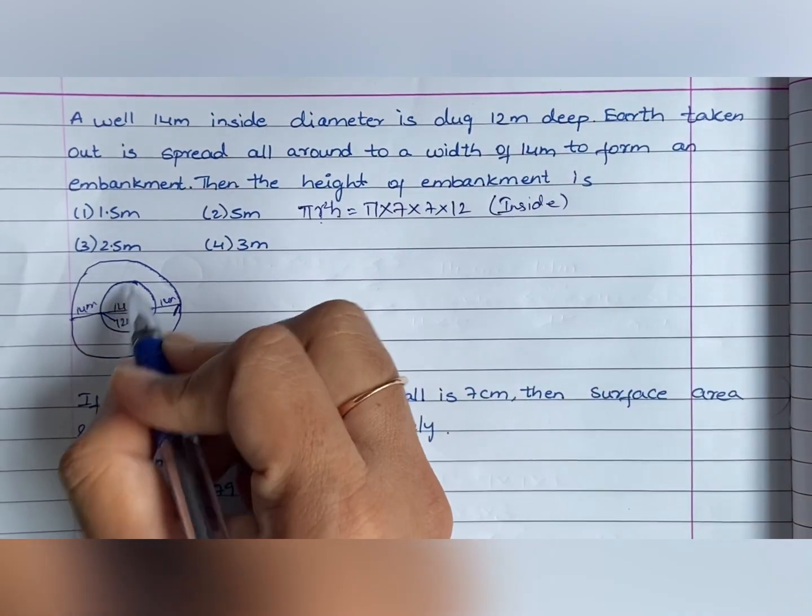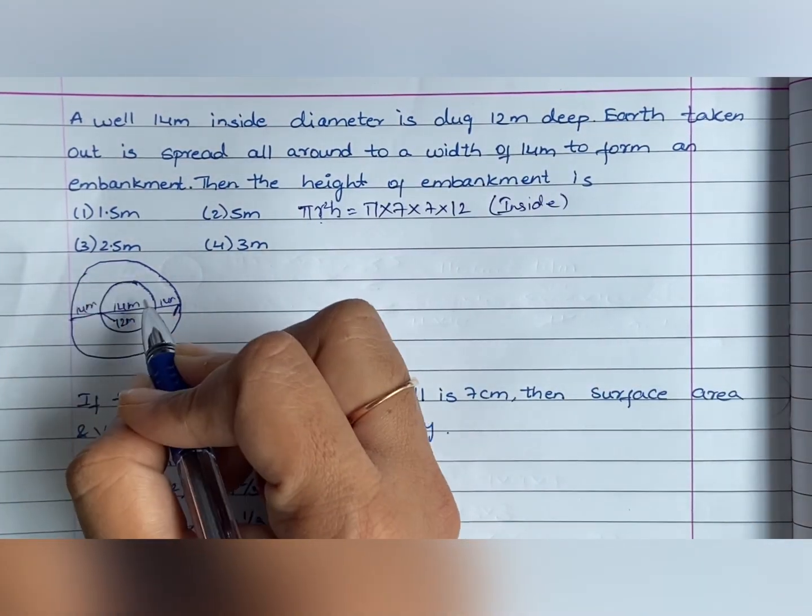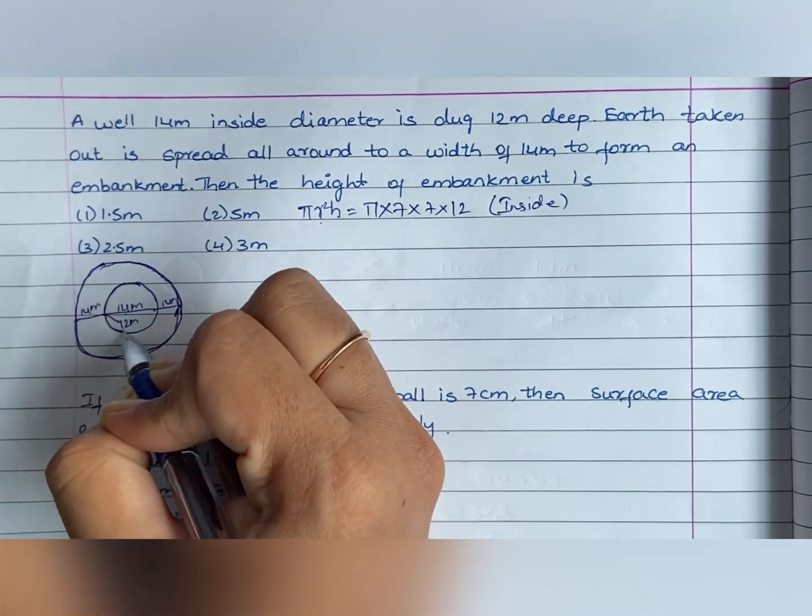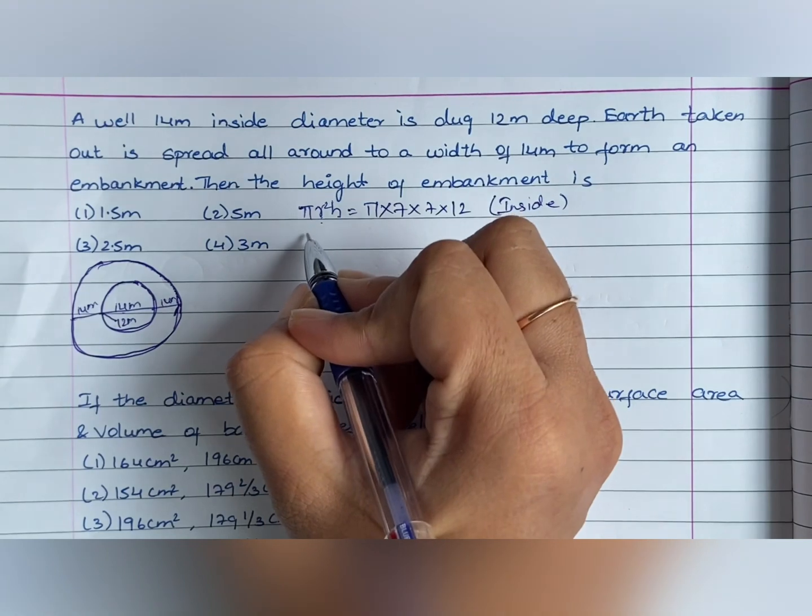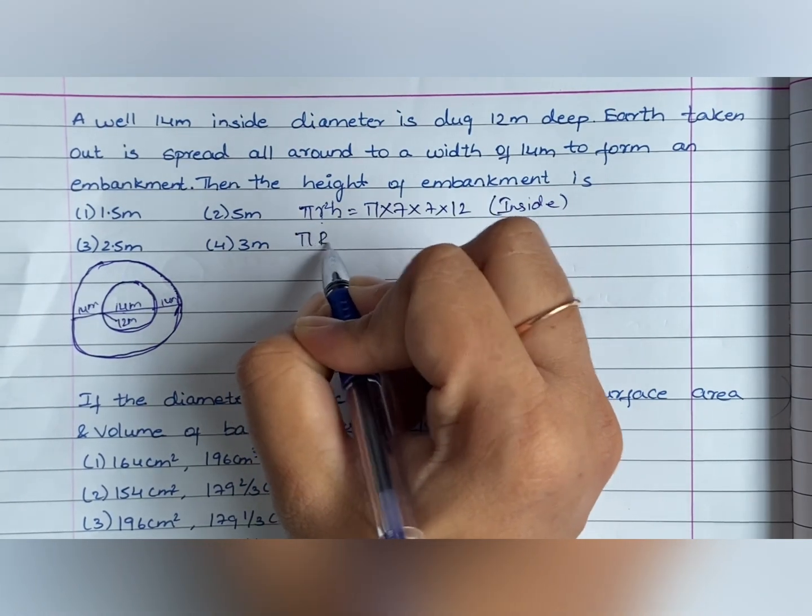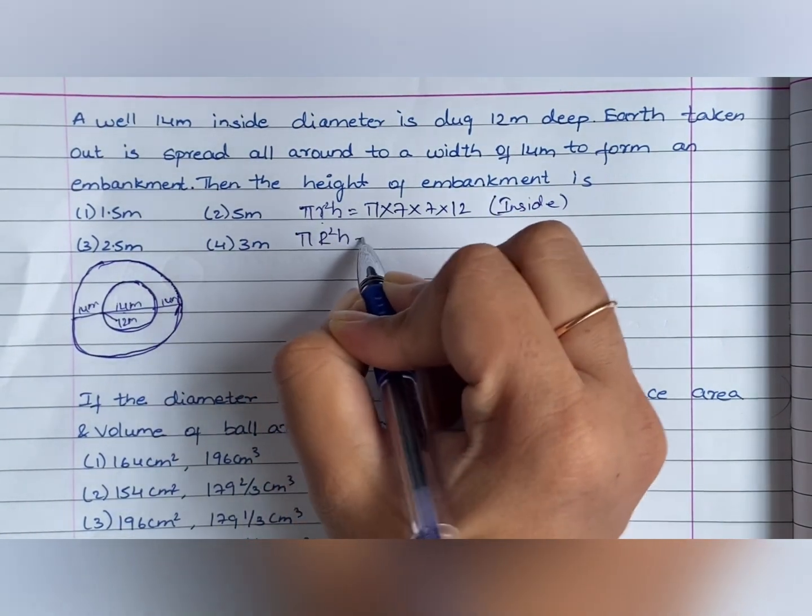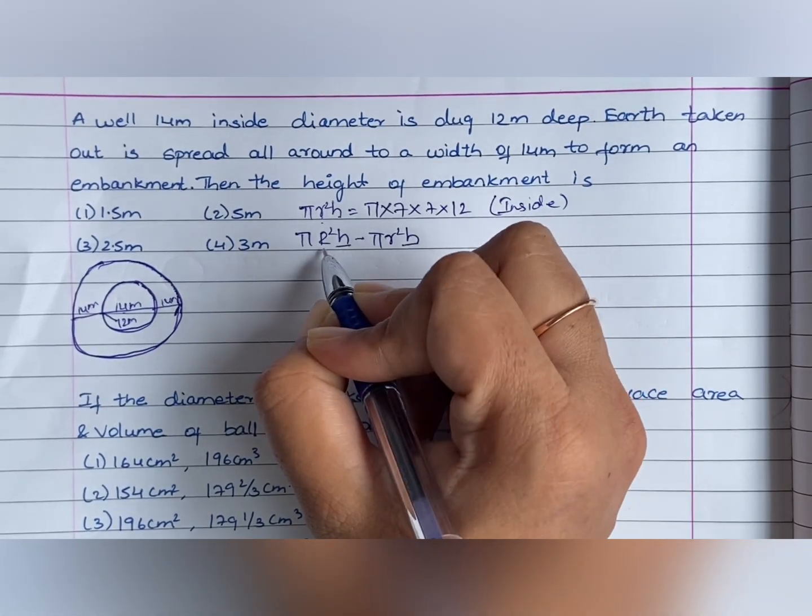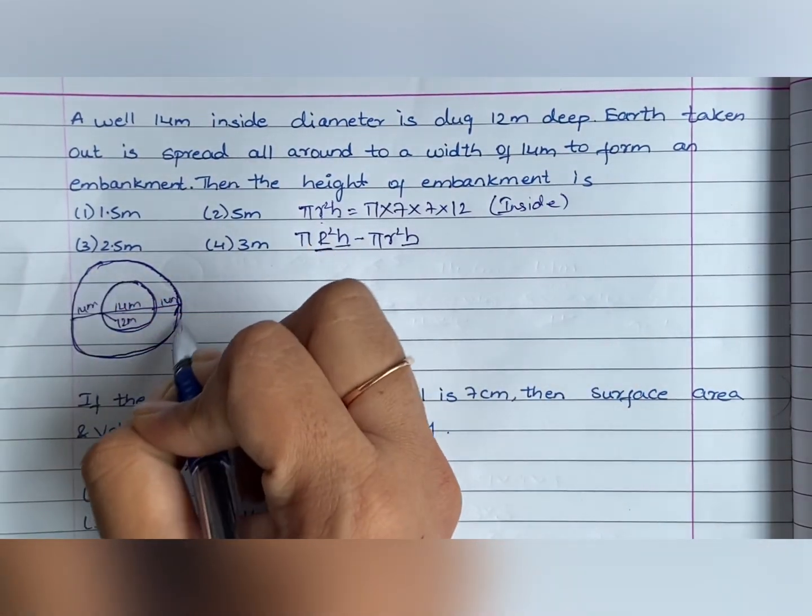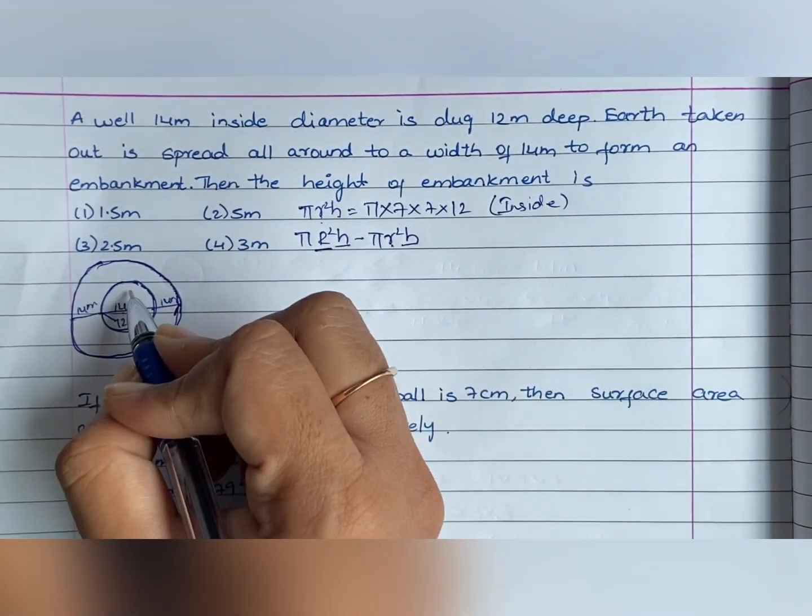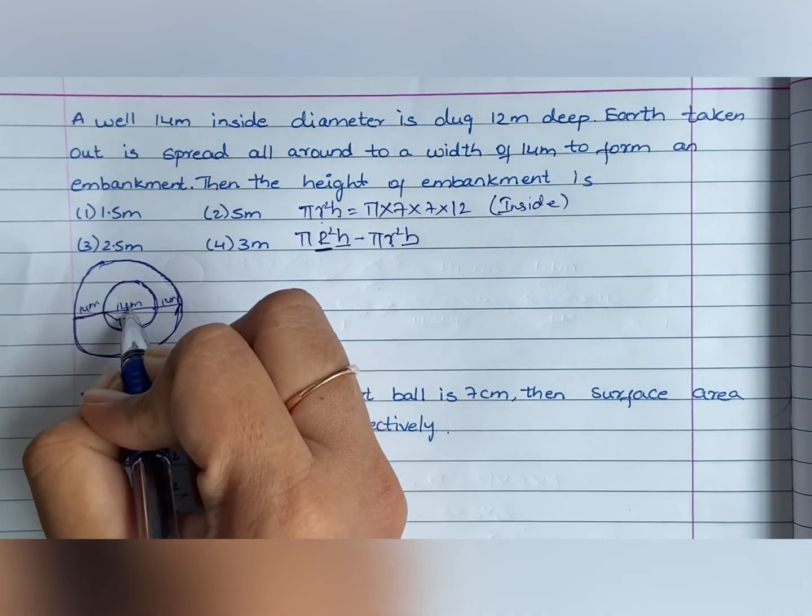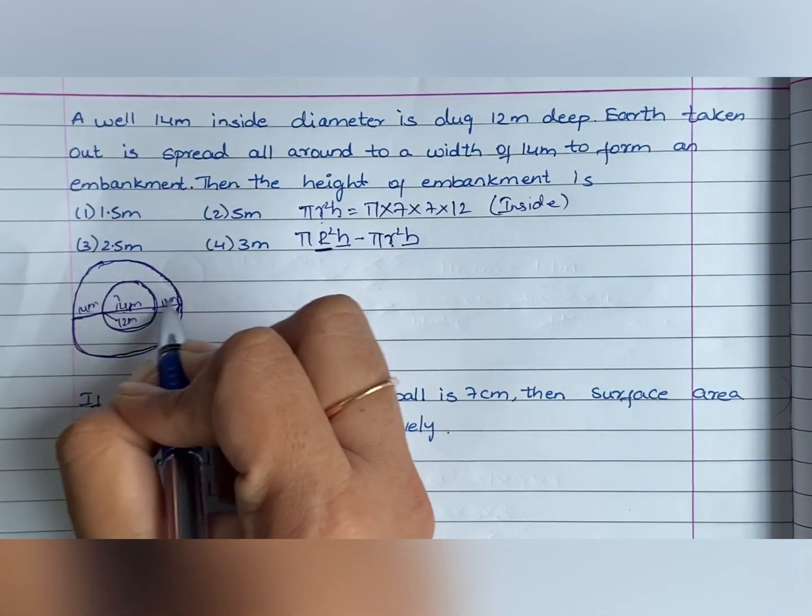Now, the volume of this is the volume of this cylinder equal to pi r square h minus pi r square h. This term is equal to this volume of this cylinder. Small r is equal to this radius. So, it is 14 plus 14 divided by 2 is 7. The total is 42.